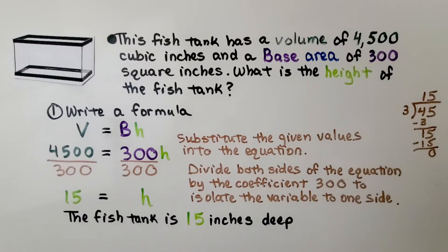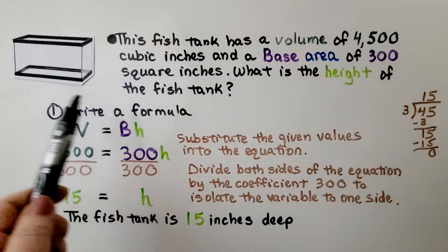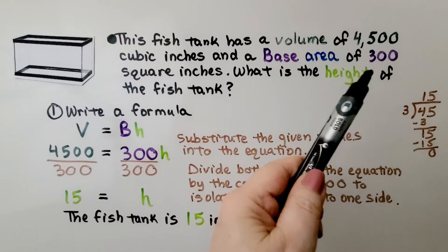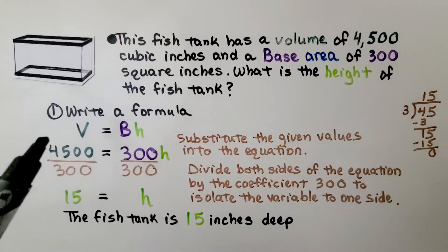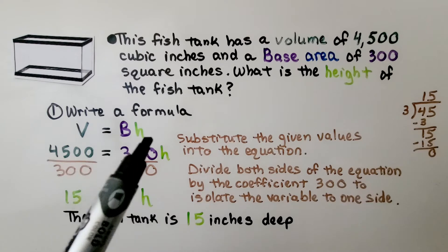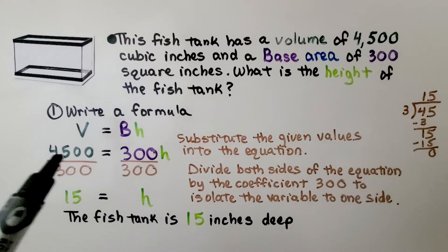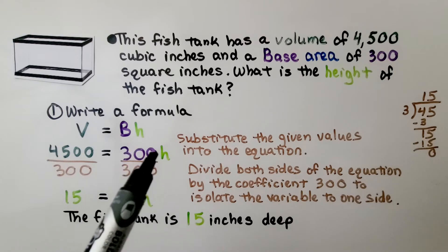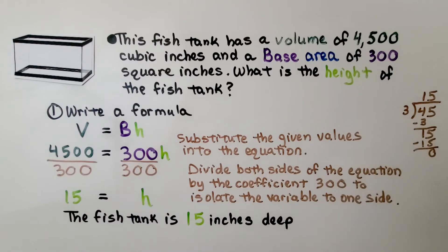This fish tank has a volume of 4,500 cubic inches and a base area of 300 square inches. What is the height of this fish tank? They already told us the length and the width multiplied together — that area is 300. We use the formula V = Bh. We know the volume is 4,500 and the base is 300. We need to find the height, so we substitute those given values into the equation.